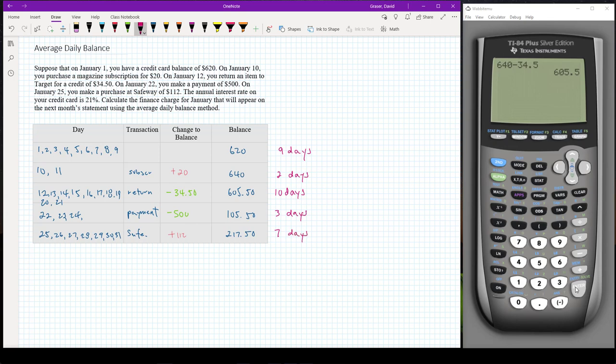So if I've done this correctly, these should add up to being 31 days. So 9 plus 2 is 11, plus 10 is 21, another 10 is 31. So I've accounted for the entire month. So now I need to work out my average daily balance.